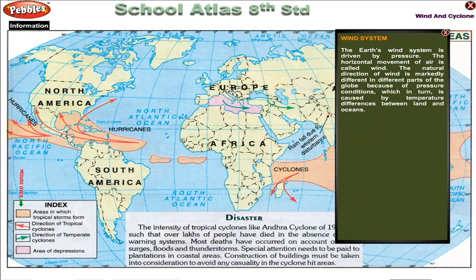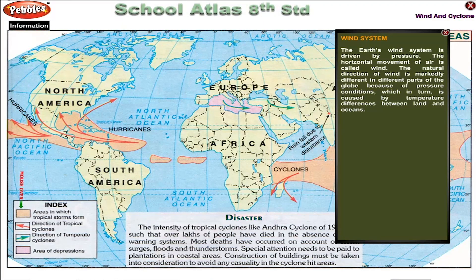Wind System. The Earth's wind system is driven by pressure. The horizontal movement of air is called wind. The natural direction of wind is markedly different in different parts of the globe because of pressure conditions, which in turn is caused by temperature differences between land and oceans.